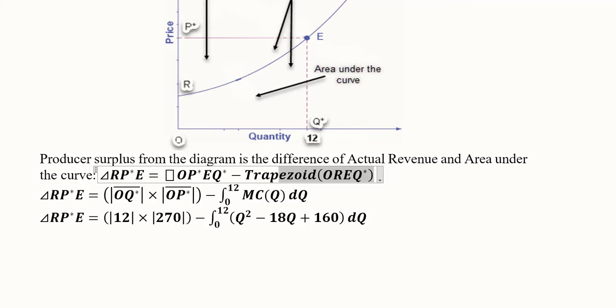The explanation is there OReq and the rectangle is OpEq. Now, we can find out these values simply. This is the rectangle, so length into width is the formula of it. The width is 12 and the length is 270, and when we talk about this trapezoid it is actually the area under the curve which can be found with the help of integrals.